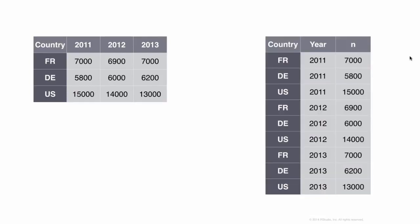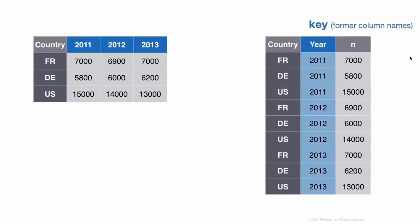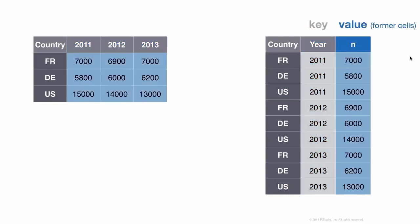We can do this with the gather function. Before we do, we need one piece of vocabulary. The output takes the right-hand side of the data frame and turns it into two columns. The first is a key column — these are the column names from the previous data frame. The second is a value column — the actual values that appeared in that field of cells. The idea of a key-value pair is pretty common. We use gather to take a field of cells and turn it into just two columns: a key column and a value column.